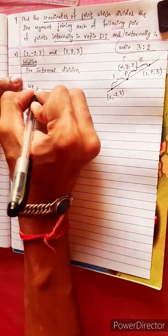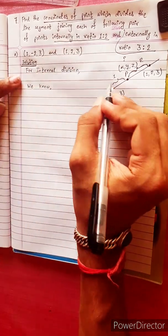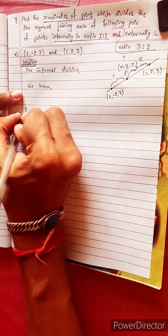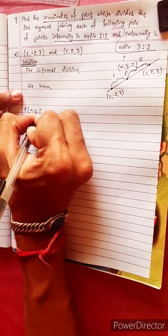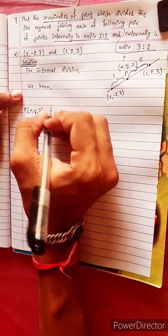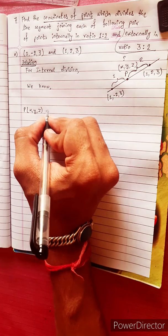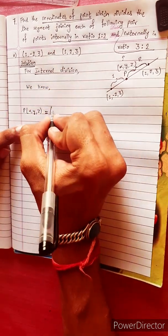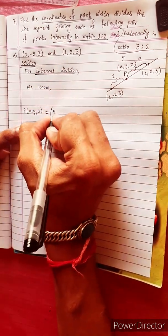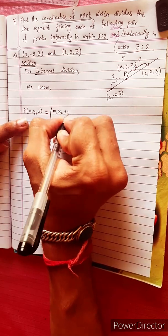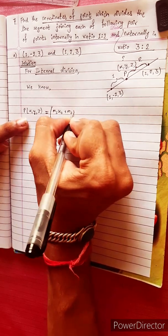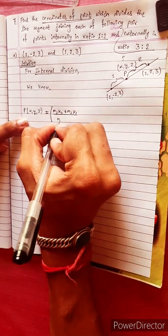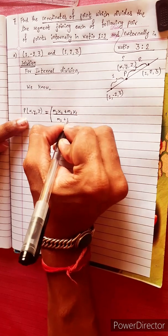We know we will use the section formula. For point P(x, y, z), using internal division, the x-coordinate is given by: m1·x2 plus m2·x1, divided by m1 plus m2.